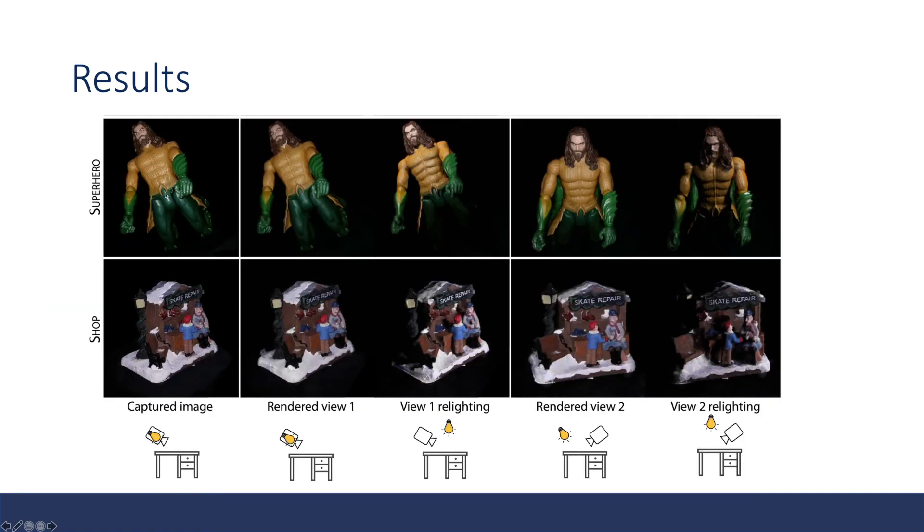Here are some results. On the left is a ground truth captured image. The second column is a rendered view. Then the other columns are changing viewing point and the lighting conditions.